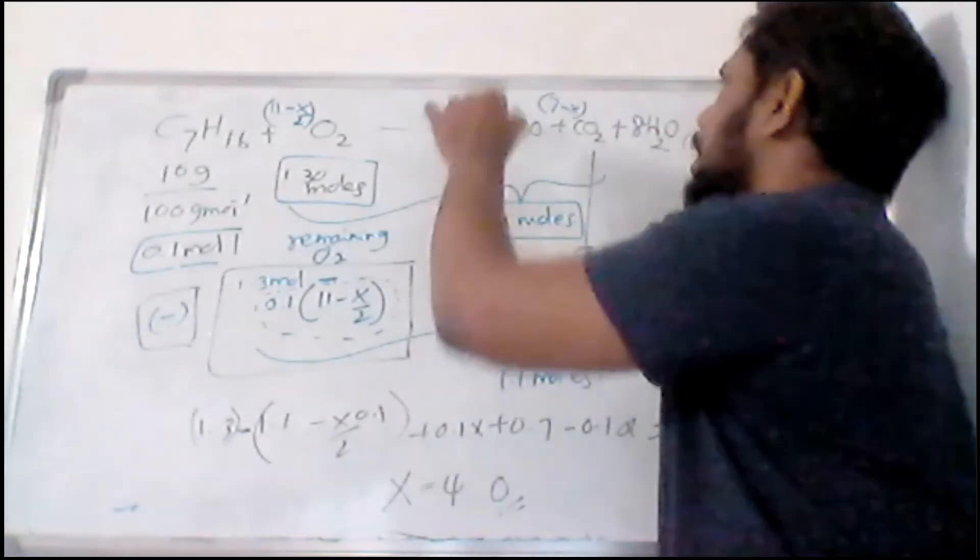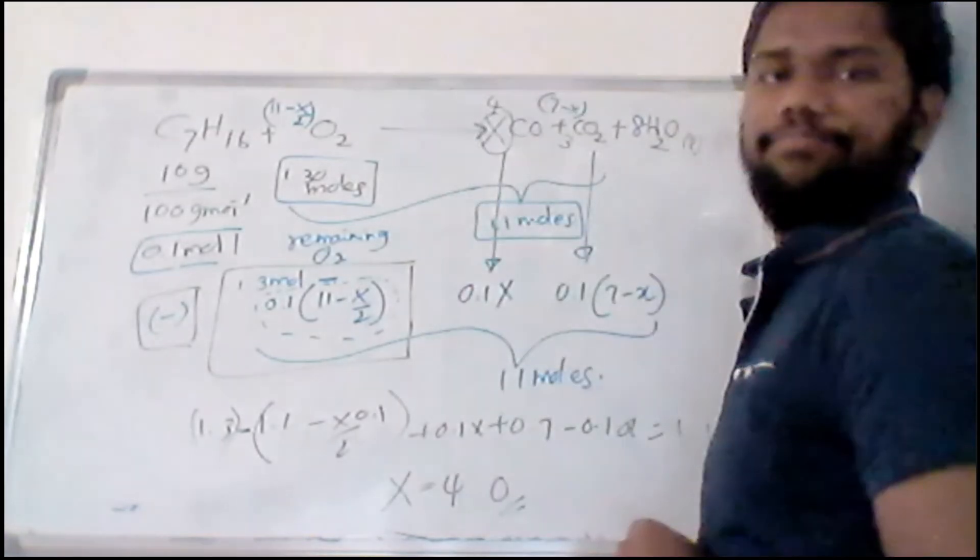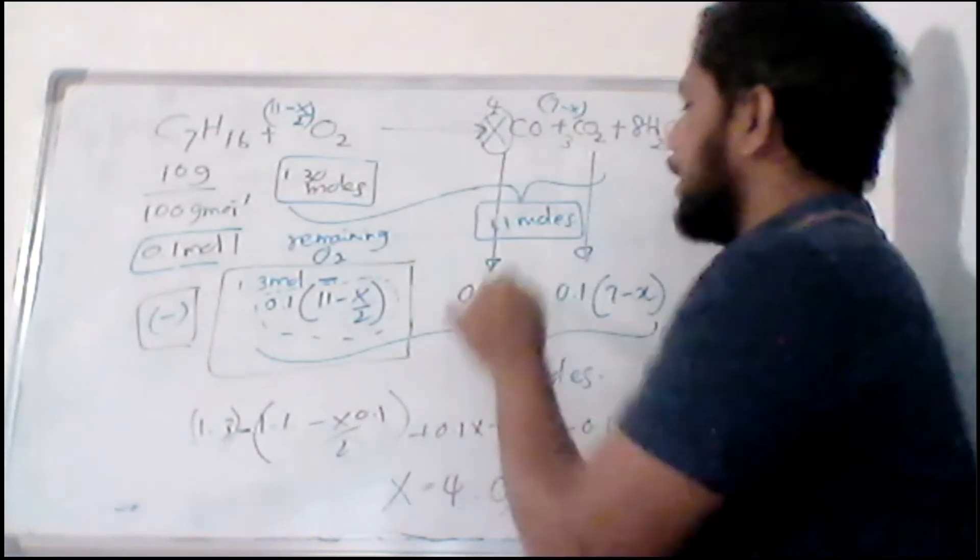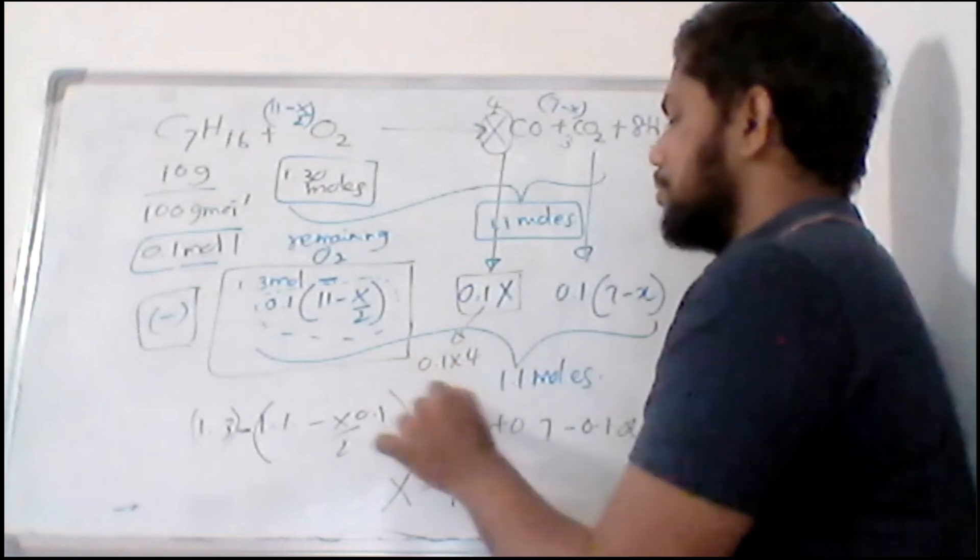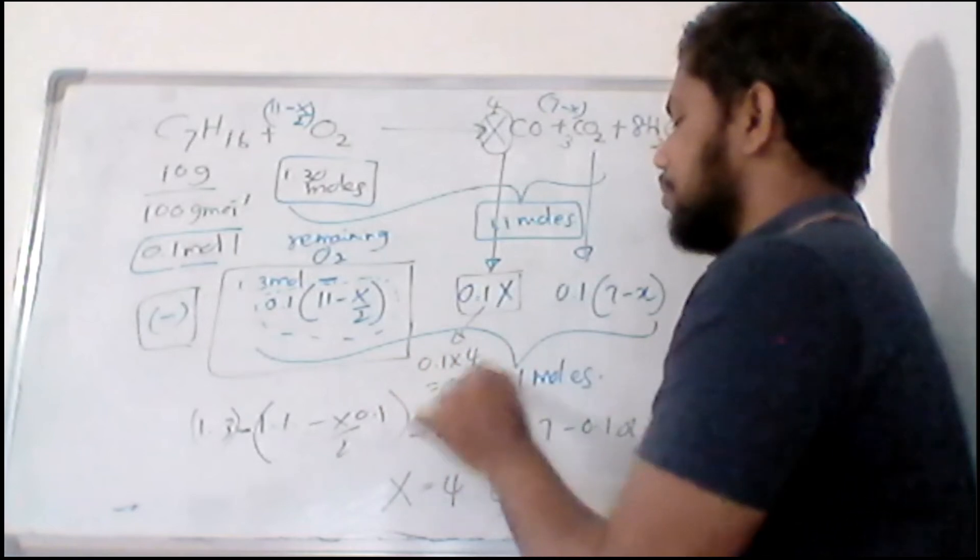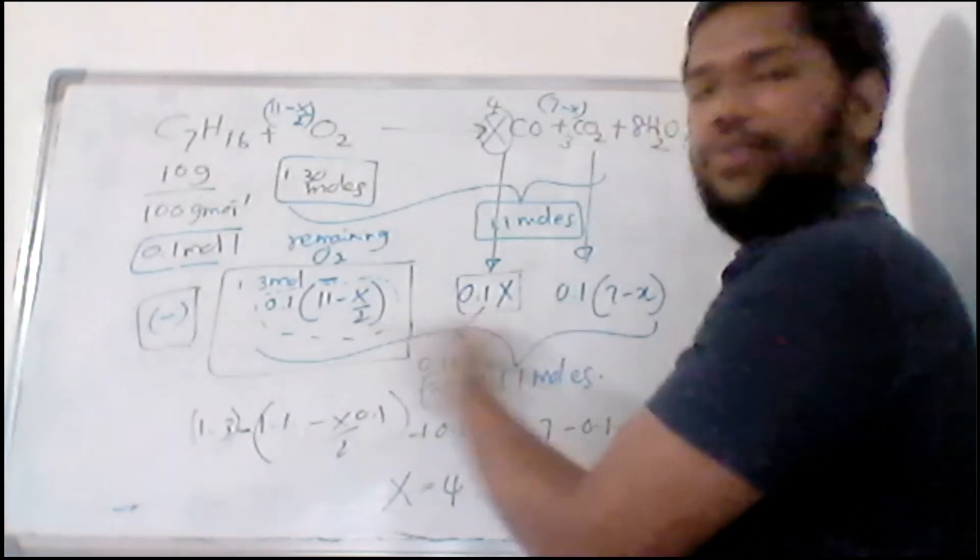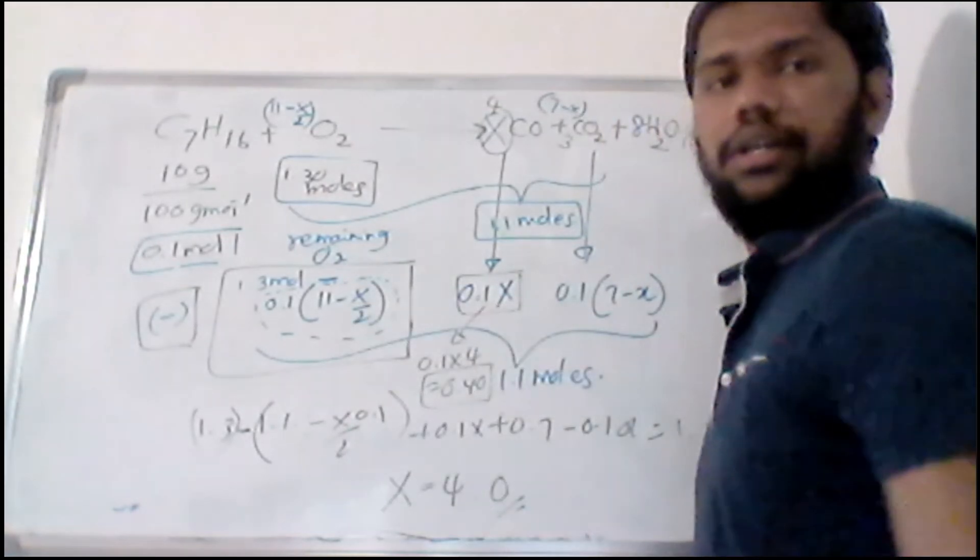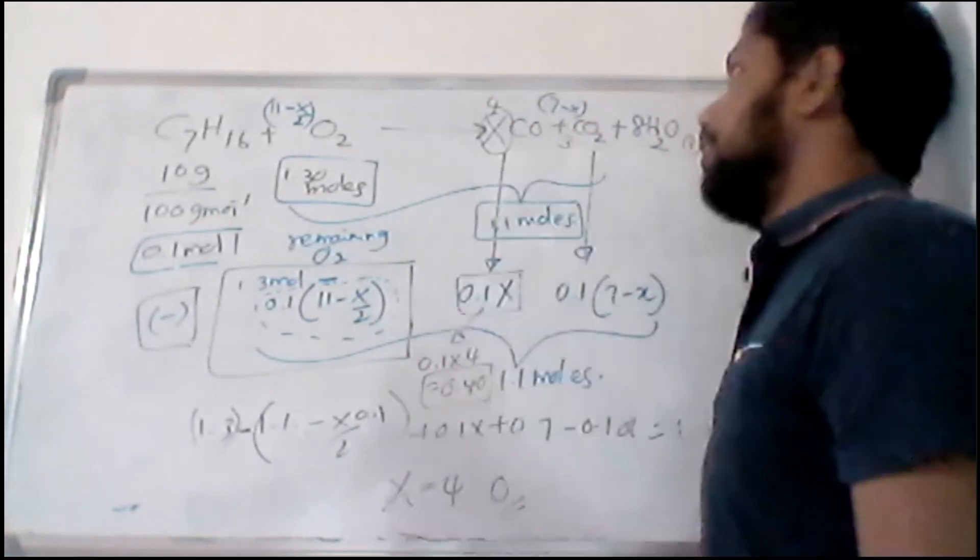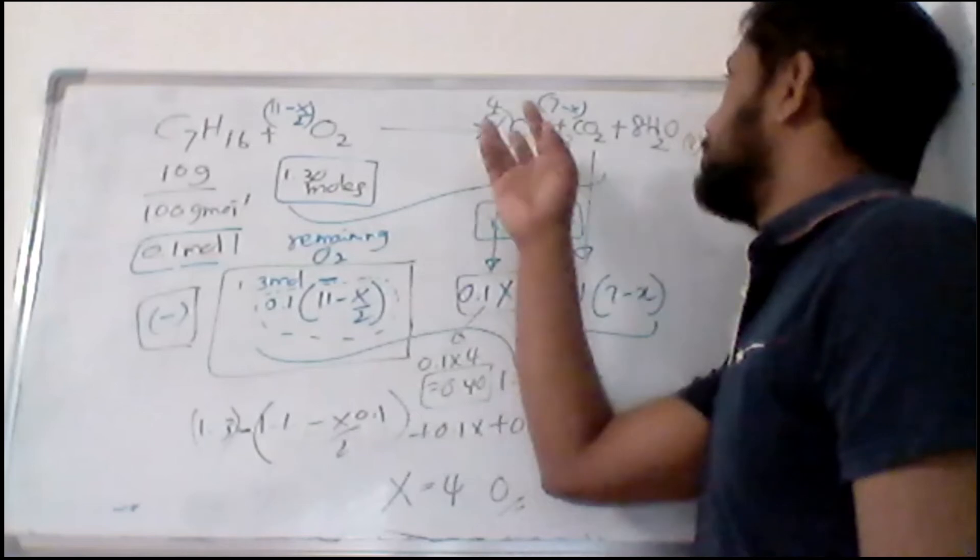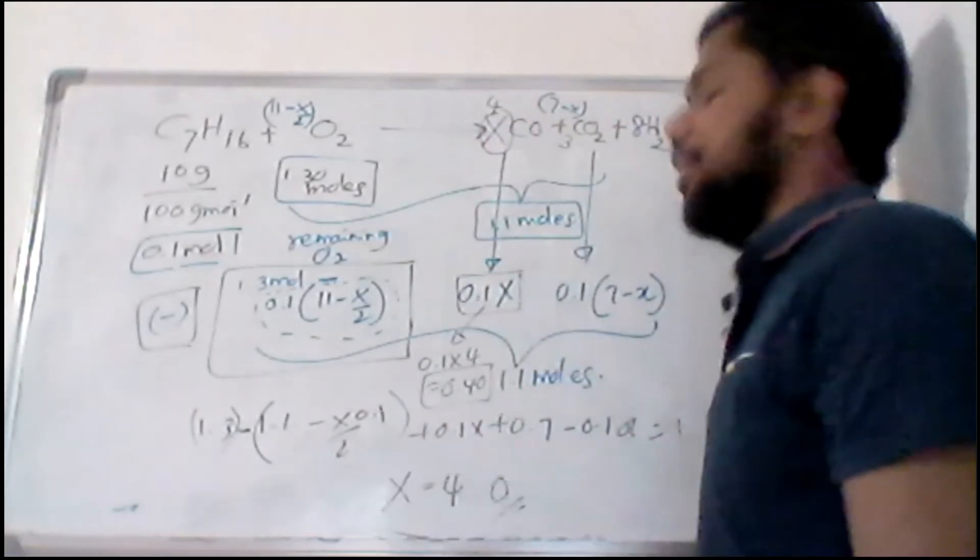And when you solve this, you will have this x as 4, which means here your stoichiometry is 4 and here the stoichiometry is 3. So basically how much CO is formed? 0.1 into 4, which is 0.4 moles. Don't think this is big, this is very simple calculation. So this is one of the ways that you can do. Otherwise you need to go for a trial and error method by putting here 3 and when you put 4 and 3, you will get this 1.1 moles at the end.